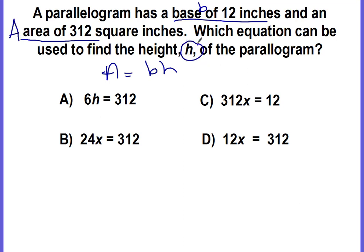We know the b is 12 and this time we know the a, so we're looking for the h, our unknown. Write your equation plugging in the values you know. We know our a is 312. Do we have something equals 312? Yes. We know the b is 12, so this is 12 × h.